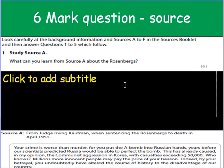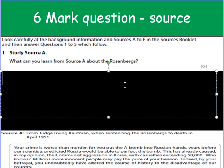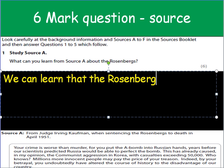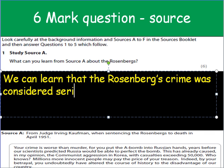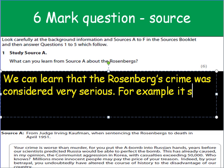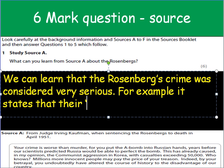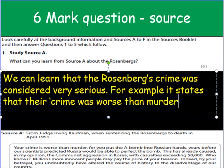The question is, what can you learn from source A about the Rosenbergs? Now the mark scheme says that for the full marks you need to be able to pick out two things that you can learn about the Rosenbergs from this case. So let's look at the first sentence: 'Your crime is worse than murder.' What does this tell us? We can learn that the Rosenbergs' crime was considered very serious. For example, it states that their crime was worse than murder. That's one point backed up with evidence.